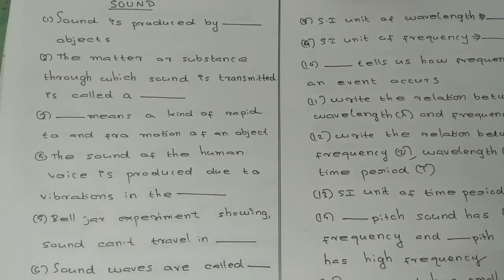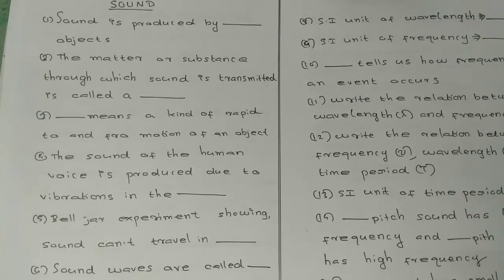Q2: The matter or substance through which sound is transmitted is called a dash. Q3: Dash means a kind of rapid to-and-fro motion of an object.